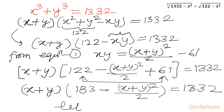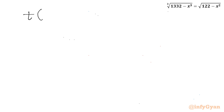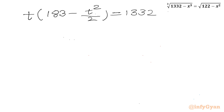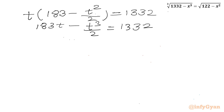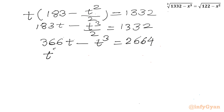Now I will use substitution. Let x plus y equal to t. So the equation becomes t times (183 minus t squared over 2) equal to 1332, or 183t minus t cubed over 2 equal to 1332. Multiplying by 2 gives 366t minus t cubed equal to 2664, or equivalently t cubed minus 366t plus 2664 equal to 0. This is one cubic equation.